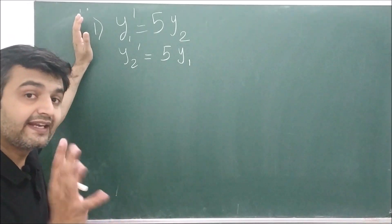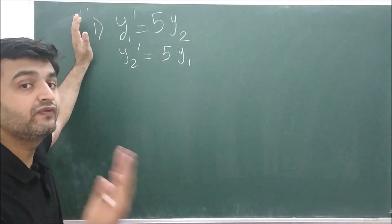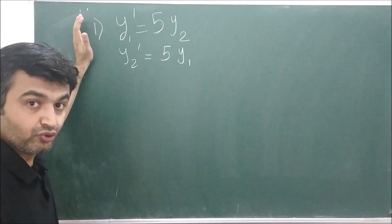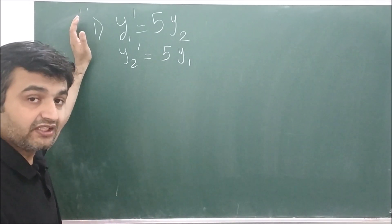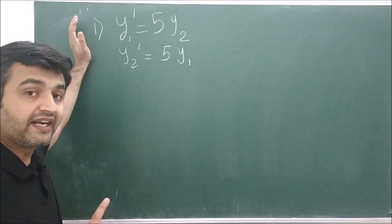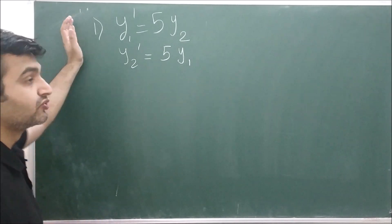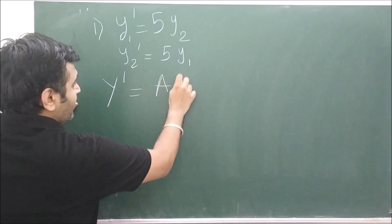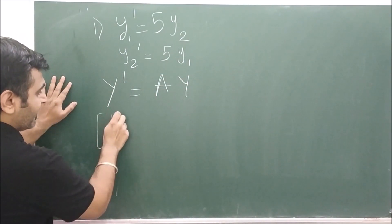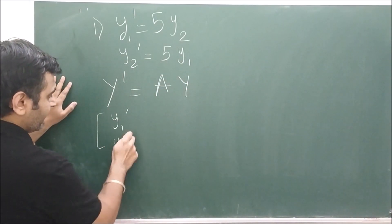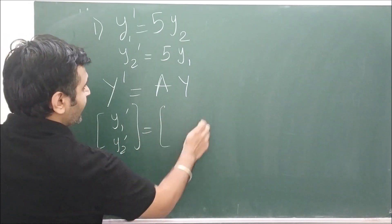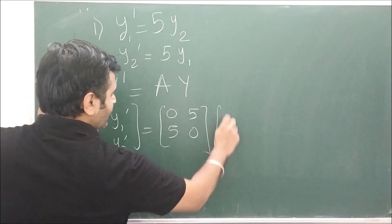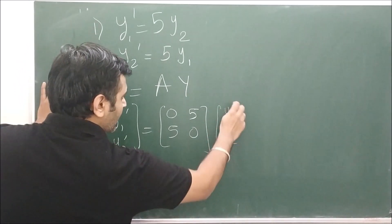In the previous lecture I directly gave you the solution and told you to verify it. Now we will see how to find those solutions. Whenever you have a system, the first thing is to write it in matrix form. So you write y′ = A·y, where y′ is [y1′, y2′]ᵀ, A is [0, 5; 5, 0], and y is [y1, y2]ᵀ. This is how you write your system in matrix form.